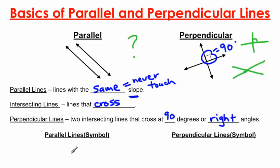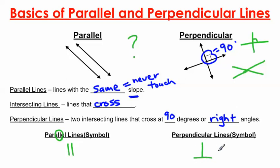There is a symbol to represent parallel lines so you don't have to write the whole word. You can use the symbol of two vertical lines — straight up and down. If you look at the word 'parallel,' there are two vertical Ls, and that's basically the symbol. There's also a symbol for perpendicular lines: if you take a capital T and flip it upside down, that gives you the perpendicular symbol. The vertical and horizontal lines in that symbol meet at a 90-degree angle, which helps you remember what it means.